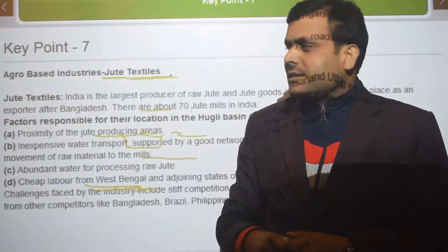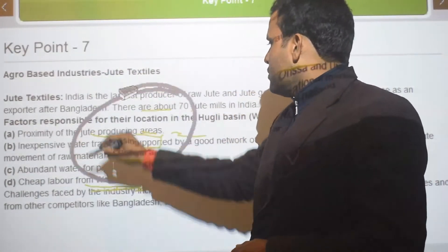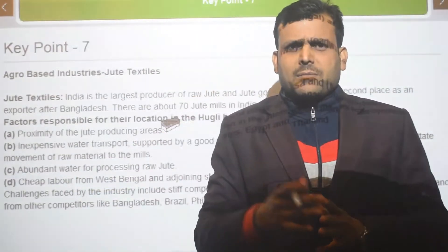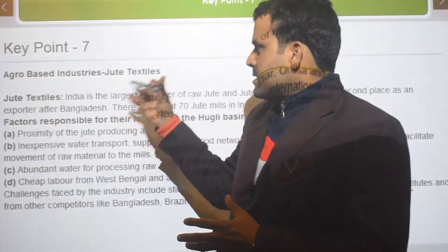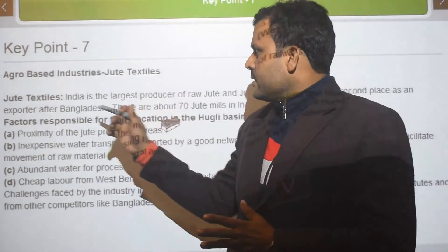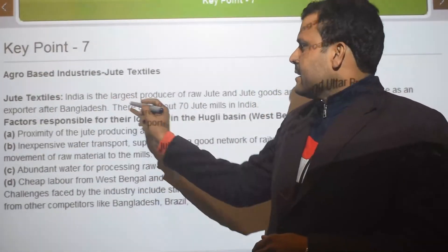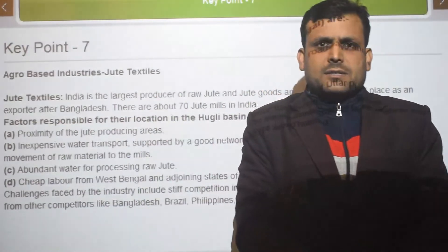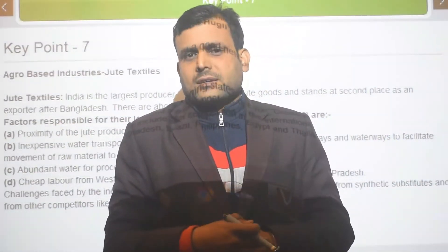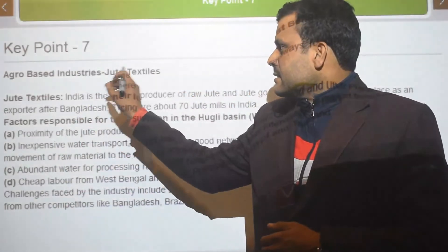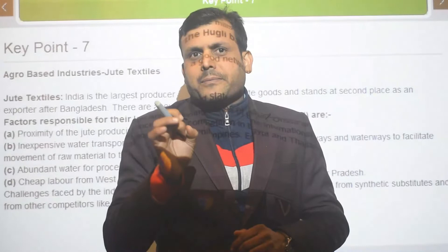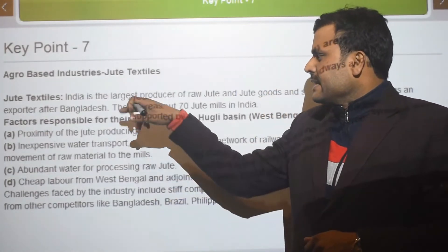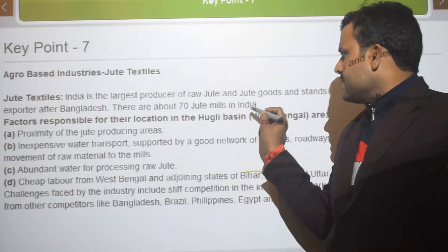Now, jute industries. Jute is used to make sacks and bags. India is the largest producer of raw jute and jute goods, and stands at second place as an exporter after Bangladesh. Bangladesh holds the first position as an exporter of jute.